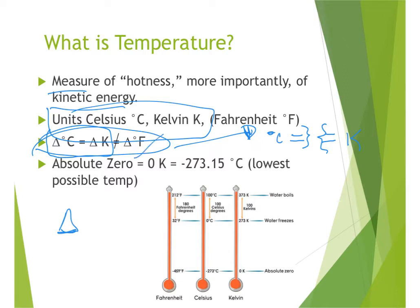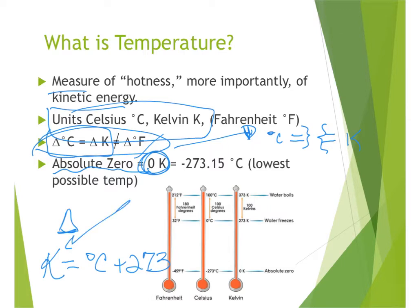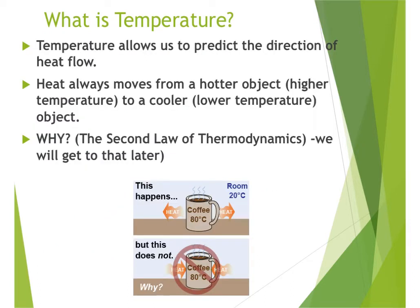A key feature of the Kelvin scale is absolute zero, theorized to be the temperature at which all motion stops — and which is believed to be impossible to reach. To convert Celsius to Kelvin, use the standard formula, and remember that the Kelvin temperature is always higher than the Celsius temperature. Temperature is also useful for predicting the direction of heat flow: heat always moves from a higher temperature object to a lower temperature object, consistent with the second law of thermodynamics.